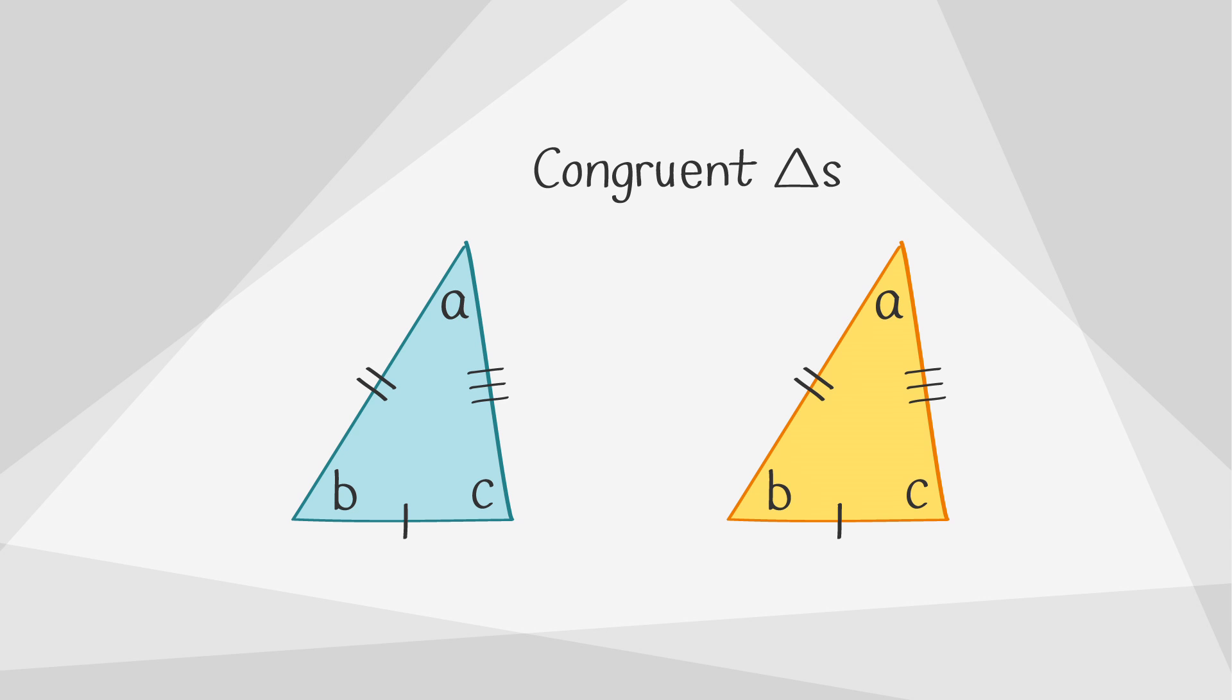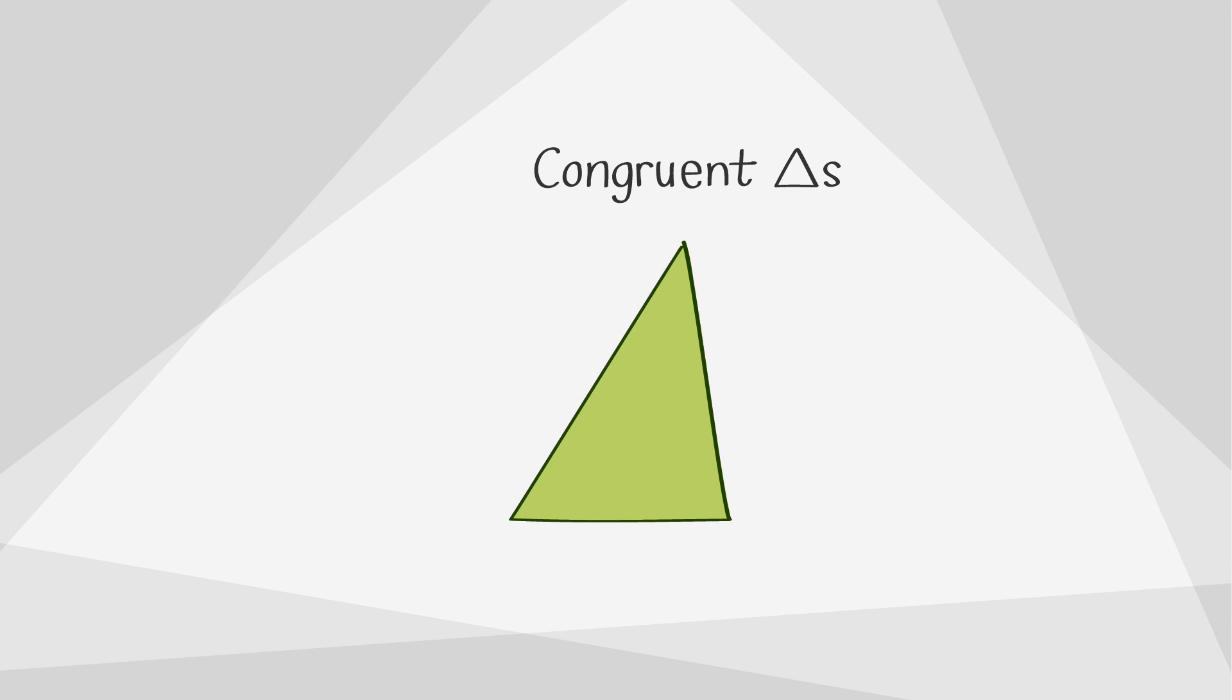When triangles are congruent and one triangle is placed on top of the other the sides and angles that are in the same positions are called corresponding parts.